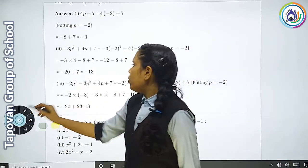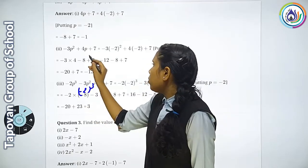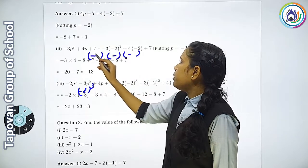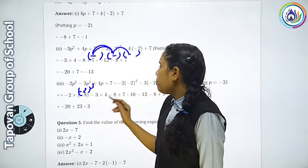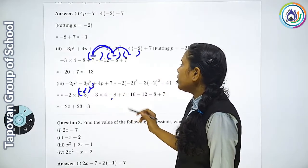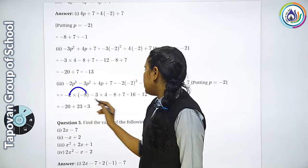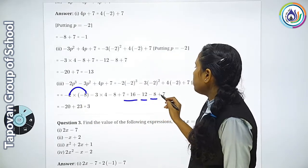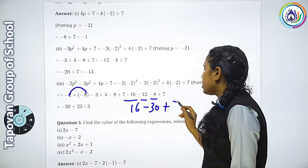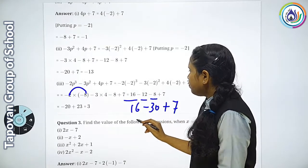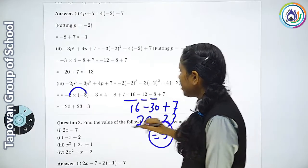3rd number: P की value minus 2 का cube. (-2)³ = minus 8. Minus into minus = plus, plus into minus = minus. तो minus 8 + 3×(-2)² + 4×(-2) + 7. 3×4=12, 4×2=8. 16+12-8-30+7. Answer minus 3 आया।